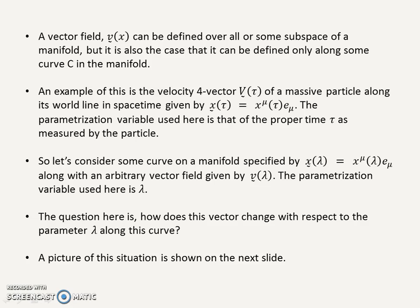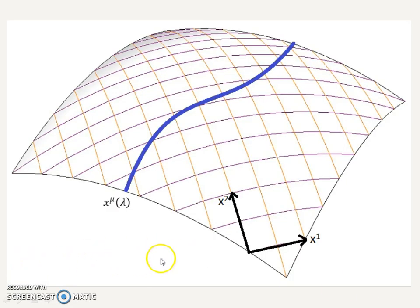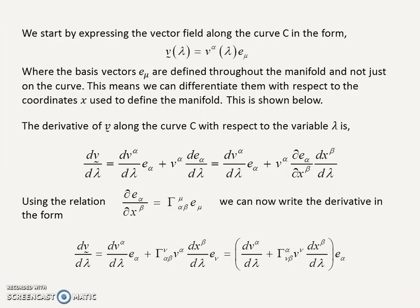Let's look at a picture of the situation to help motivate the discussion. Here's our manifold. These are the coordinate lines marked in purple-red, labeled x1 and x2. The parameter is lambda, and here's our curve on the manifold. We're interested in how a vector field changes along this curve. The basis vectors are by definition derivatives of the coordinate lines — they are tangent to the coordinate lines — and so they're defined throughout the manifold, related to the coordinates, and are defined both on and off the curve.